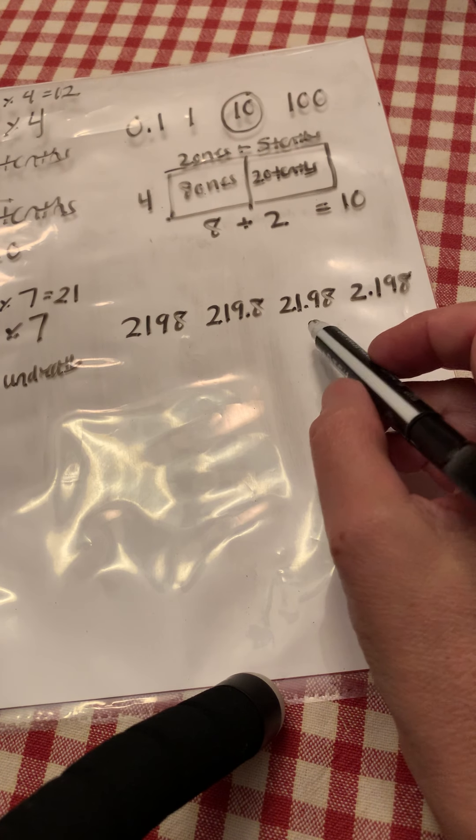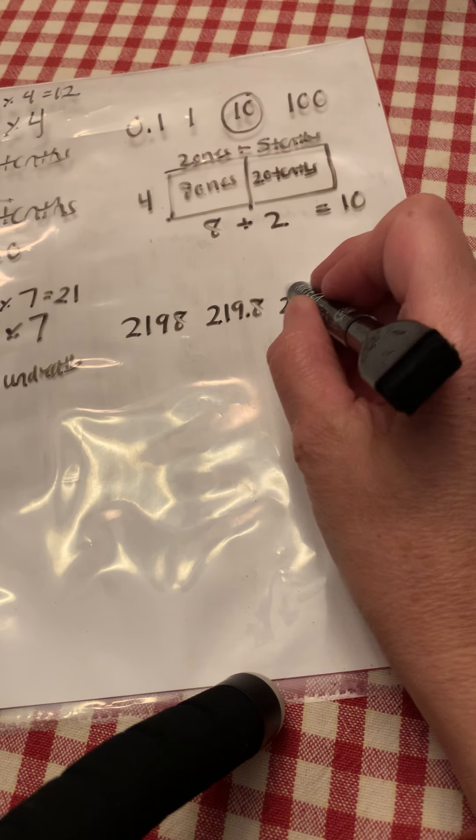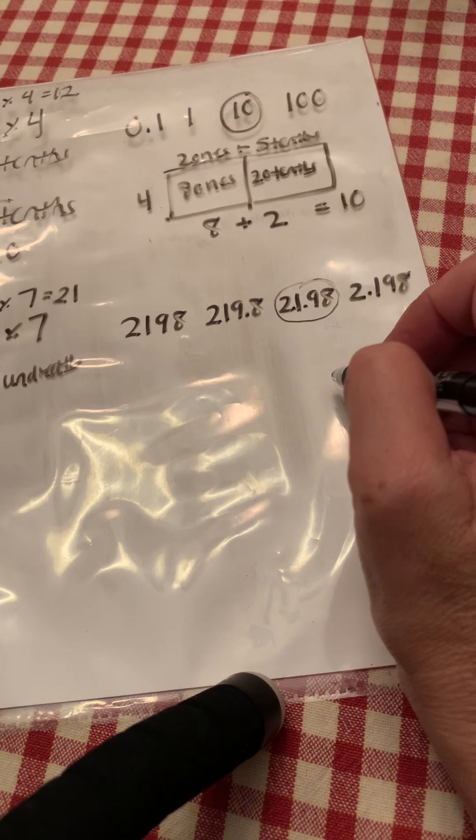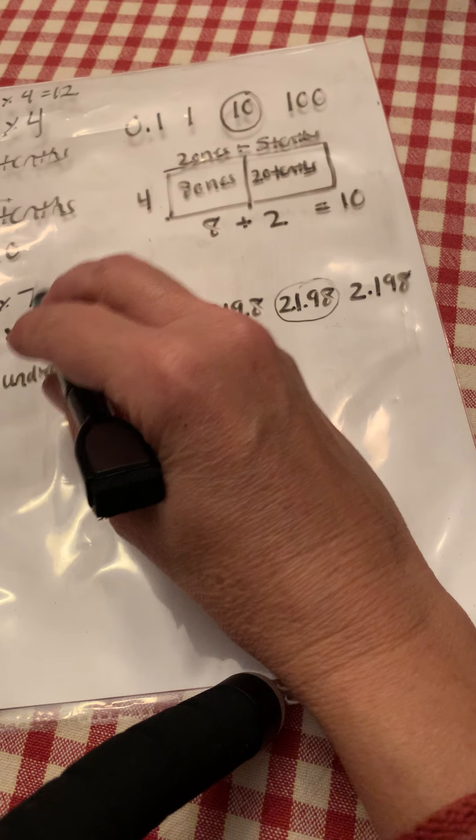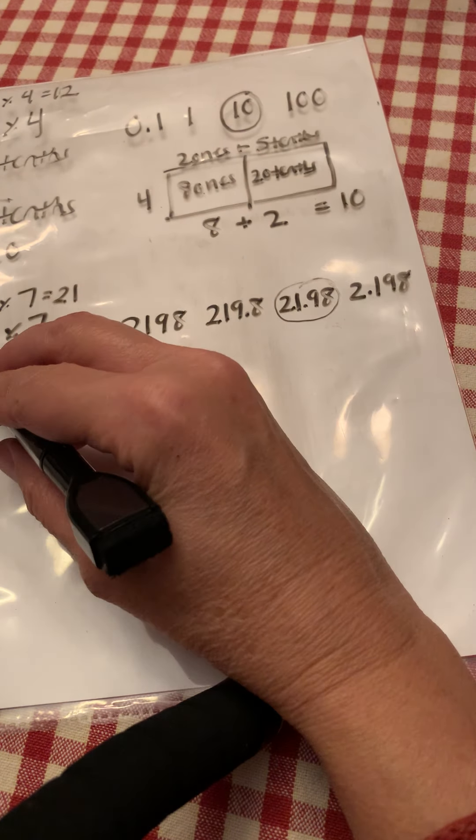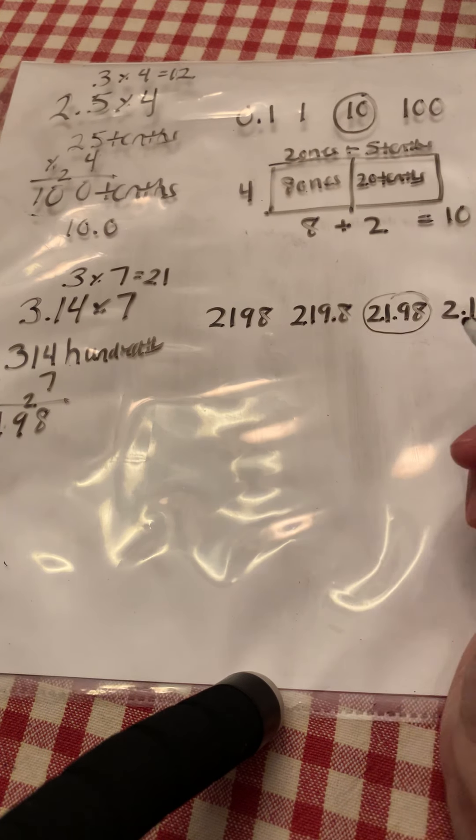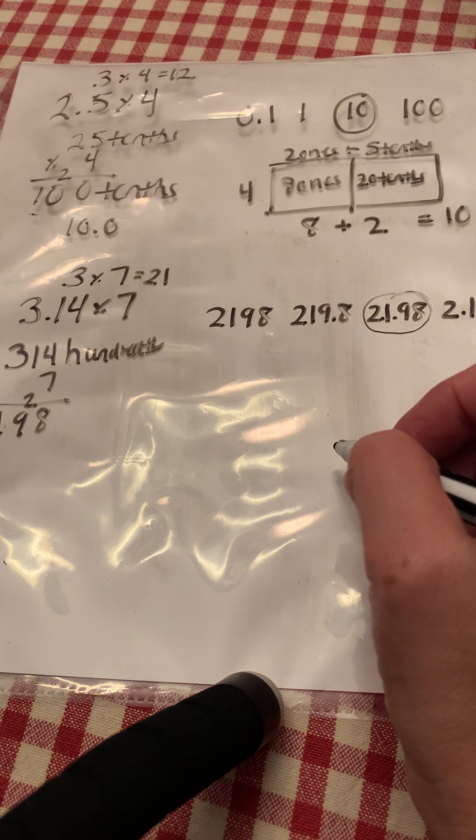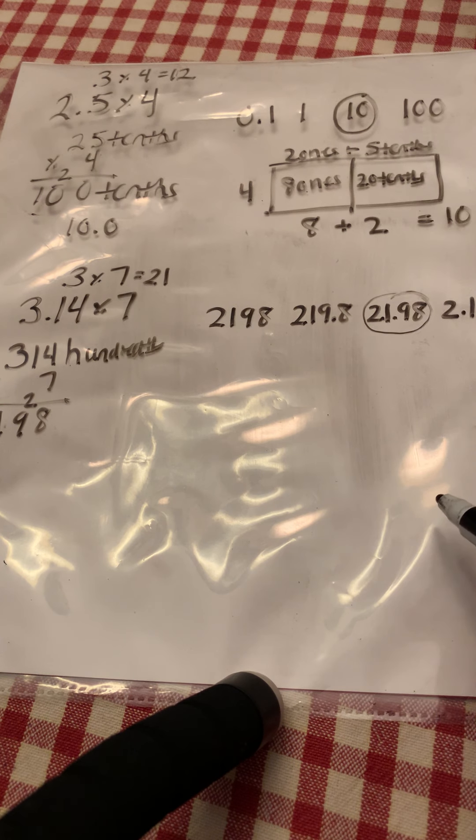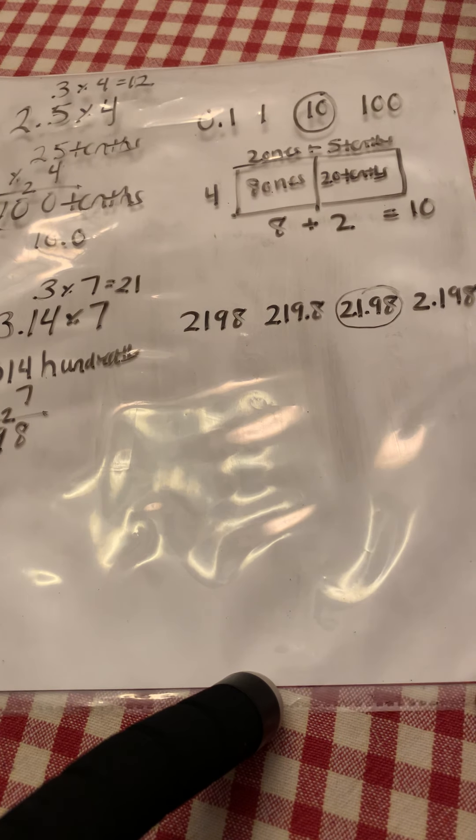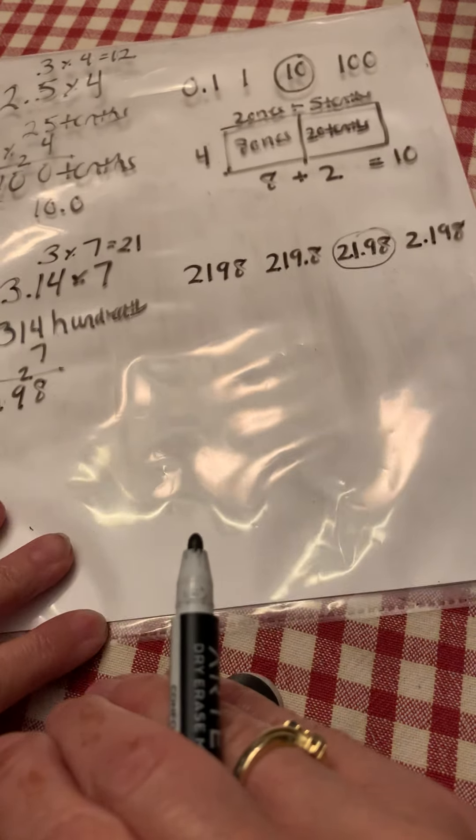Now, at this point, you could say, I think 21.98 hundredths is the most reasonable because three times seven is 21 and 3.14 hundredths is a little bit bigger than three. And if you wrote that sentence, that would totally answer the question. You could also do another area model to prove which one it is. So there's more than one way to answer the question.